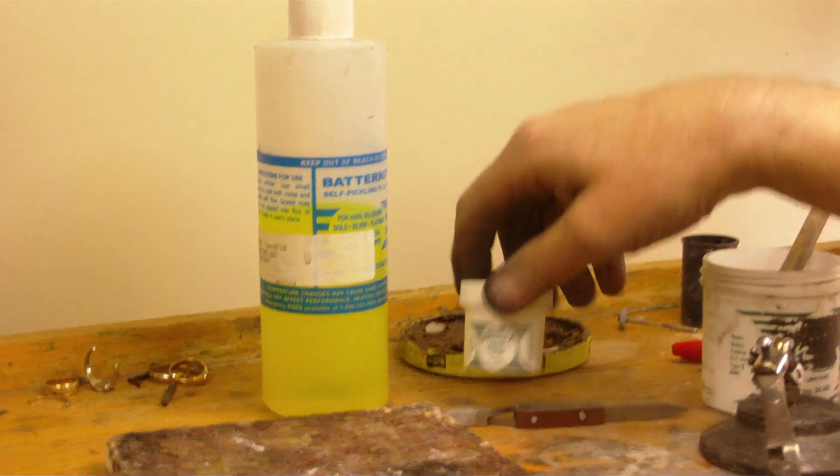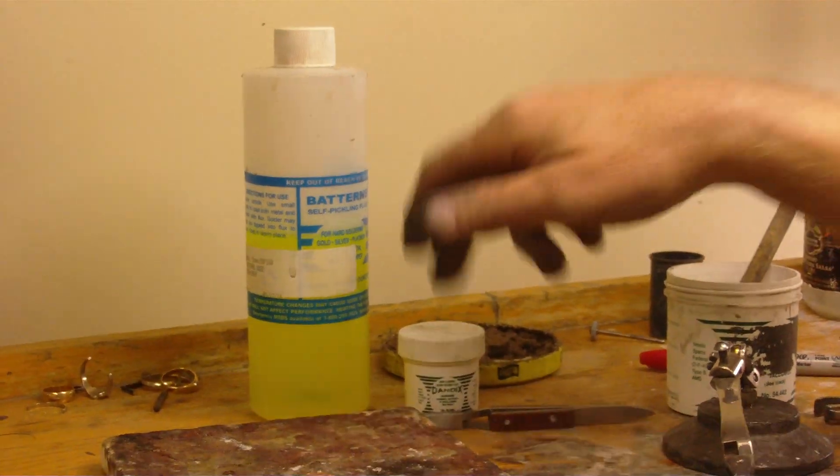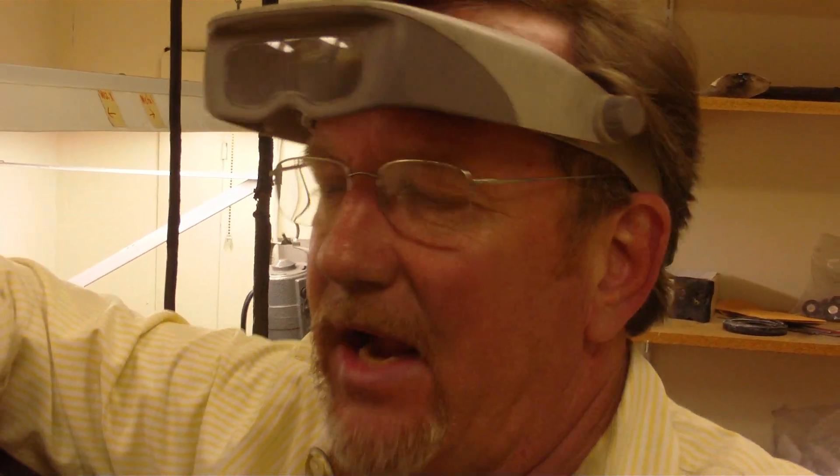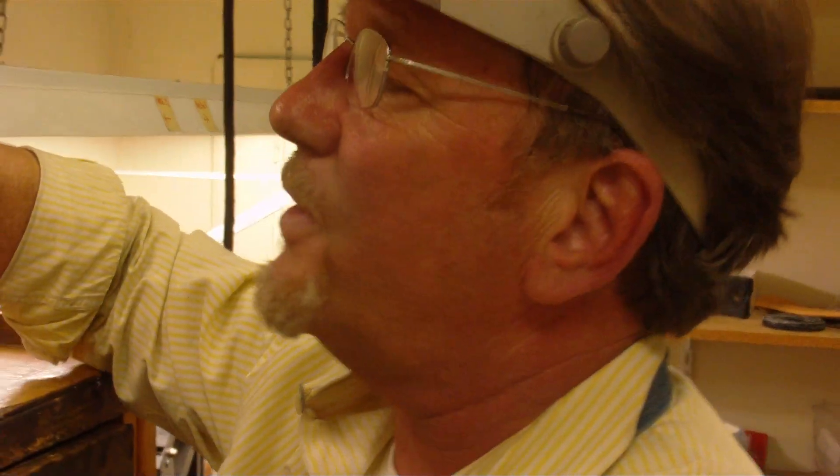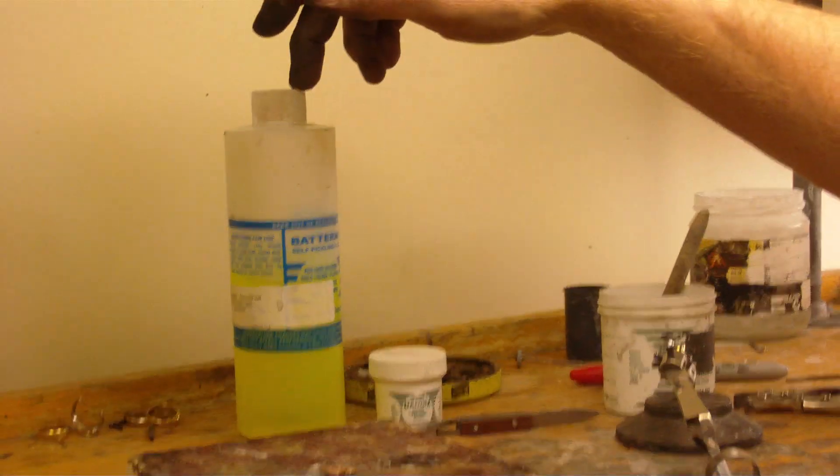Green flux, white flux. The main difference between silver and gold. One of them requires oxygen in order to solder. One of them requires the lack of oxygen to solder. Can't remember which one is which. One of the fluxes does one, one of the fluxes does the other. All you need to remember: green flux, gold. White flux, silver.